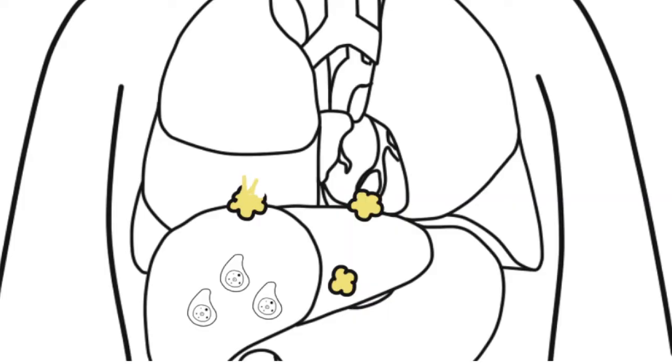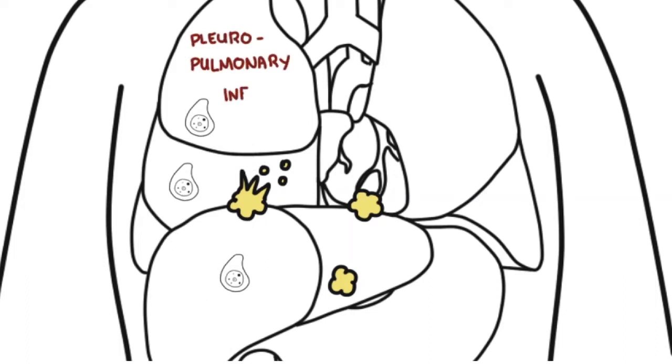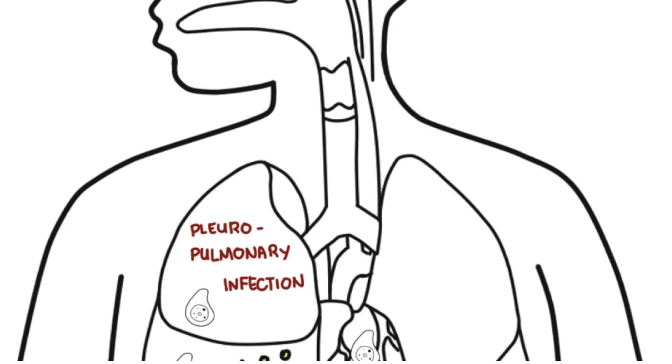If the liver abscess grows and ruptures into the pleura of the lung, which is right above the liver, it can cause pleuro-pulmonary infection. Other sites the trophozoites can invade include the brain and the heart, typically via rupturing of the liver abscess into the pericardium.